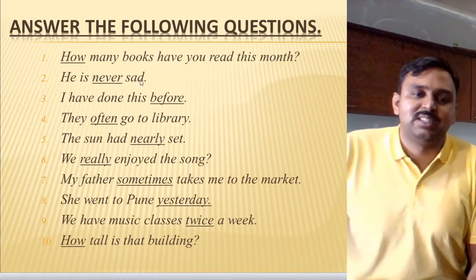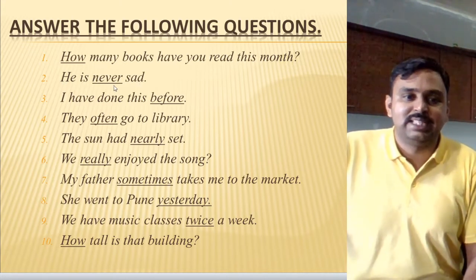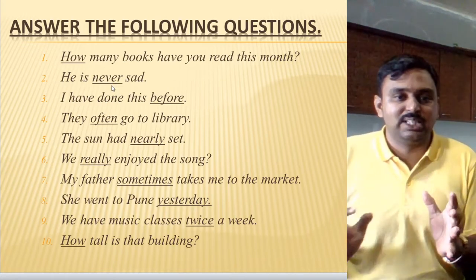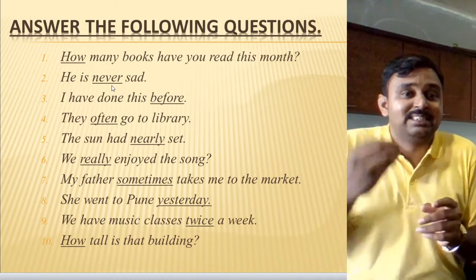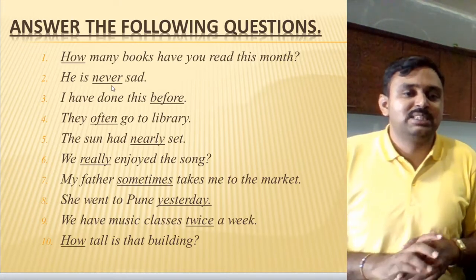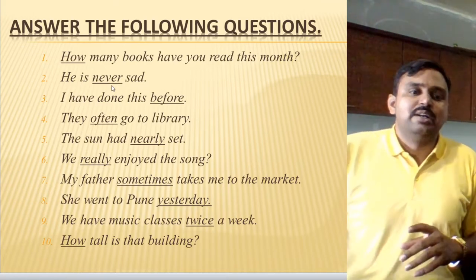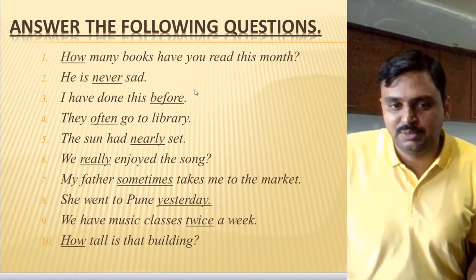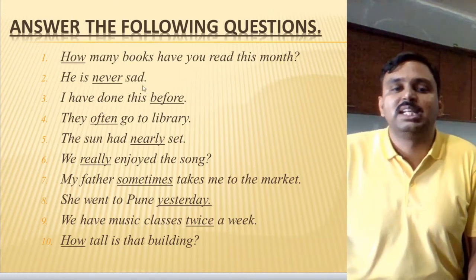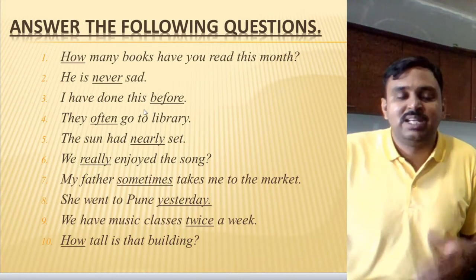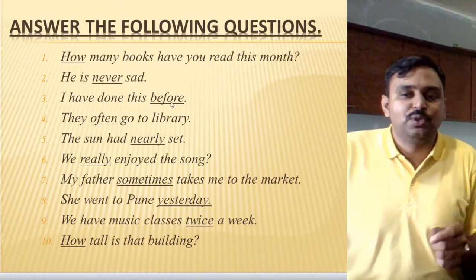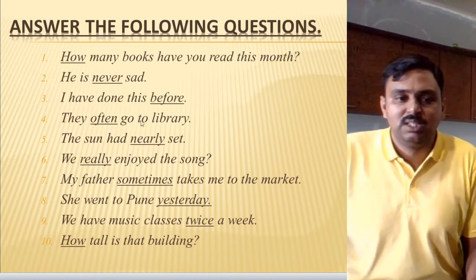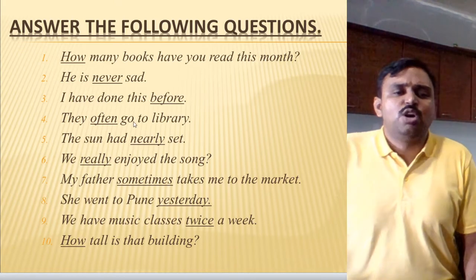Next example: 'He is never sad.' The word 'never' is used — it is a negative word, so this is an example of adverb of negation. Next, example three: 'I have done this before.' When have you done this? Before. So 'before' is giving you the time of the action, and it is an example of adverb of time.